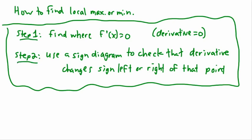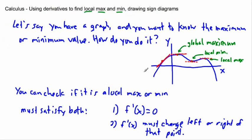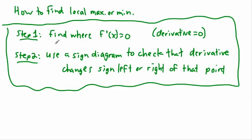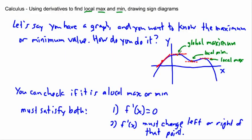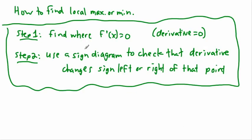So first find where f prime of x equals zero — take the equation, find the derivative, and find what values of x make it zero. Maybe there's one, maybe there's lots. In this case we had at least three. Then to check what kind of point it is, you use a sign diagram. We don't care about the actual value of the derivative left or right — just the sign. We check if it's positive or negative — increasing or decreasing — and confirm it changes sign. Positive to negative is a local max; negative to positive is a local min.